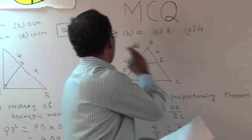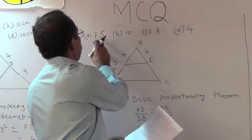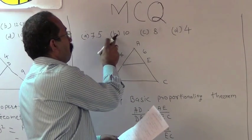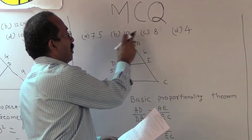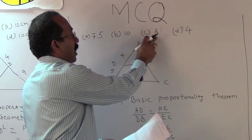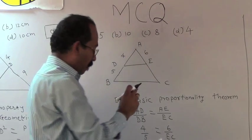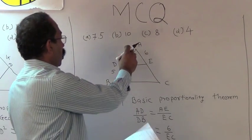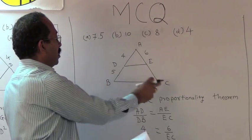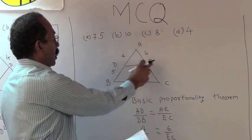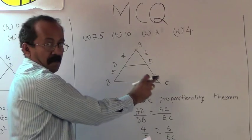The alternatives are: A) 7.5, B) 10, C) 8, D) 4. The diagram shows triangle ABC with DE parallel to BC.